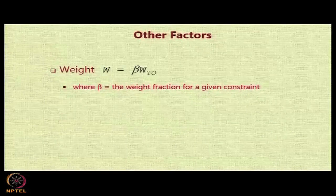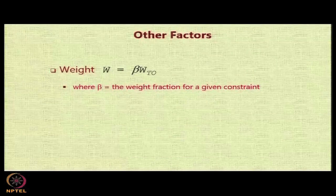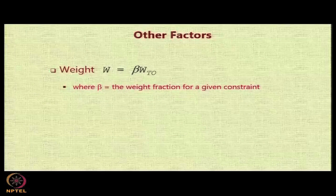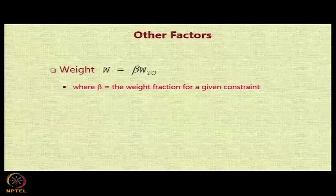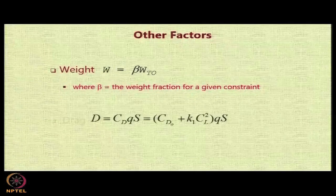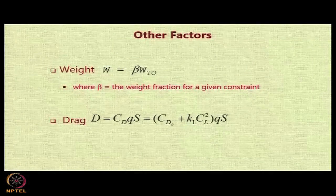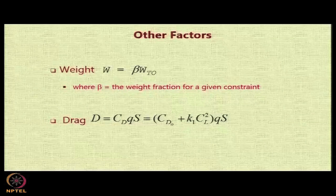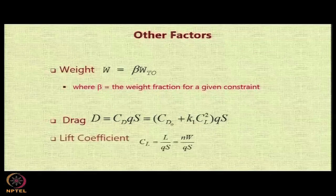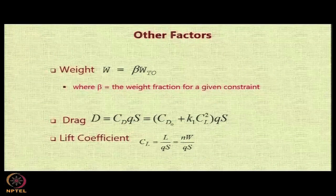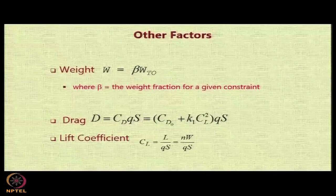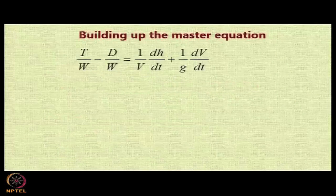Now we look at weight. Weight of the aircraft W is always going to be changing as we go into the flight profile. In general, weight at any point in the performance of the aircraft will be β times WTO, where β is the weight fraction for a given constraint. Regarding drag, drag can be replaced by CD into Q into S. If we assume parabolic profile for the drag polar, we can replace CD with CD0 plus K1 CL squared. The lift coefficient is going to be N times W, so CL will be equal to L upon QS, which will be N times W upon QS.